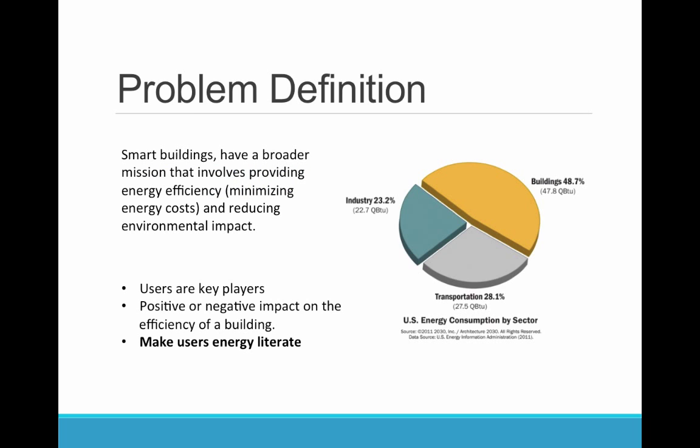Literature review on the design and development of buildings delineates the development of these structures for the sole purpose of comfort and refuge. Over time, these buildings and their components have evolved with technology to provide the most comfort to their inhabitants. But state-of-the-art buildings — smart buildings — have a broader mission that involves increasing energy efficiency and reducing environmental impact. Understanding the problem of developing such smart buildings calls for the consideration of a building's users as key players who can either have a positive or negative impact on the efficiency of such buildings. Therefore, tackling the problem of developing a smart building begins by educating users on their energy consumption habits and making them energy literate.